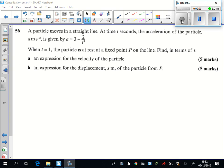Question 56 here. We're given an acceleration. Acceleration is equal to 3 minus 2t to the power of negative 2, and I'm going to write that as a negative power because I know what's coming next.